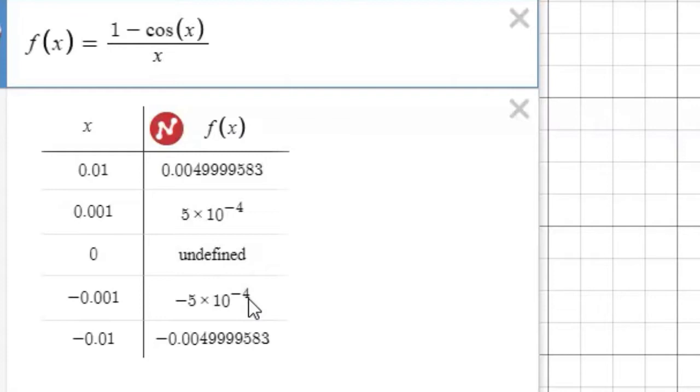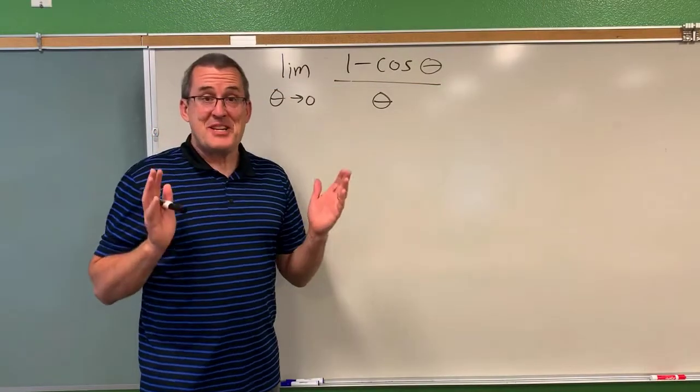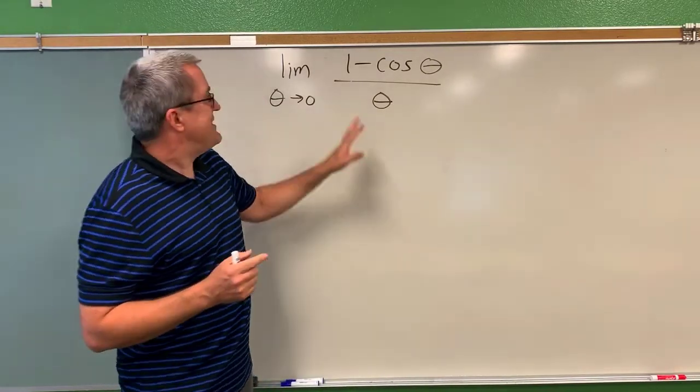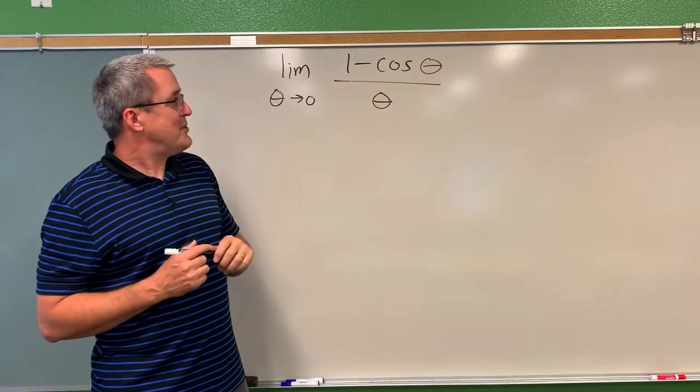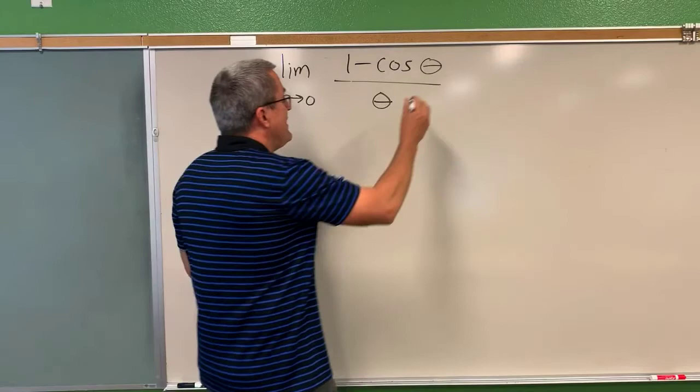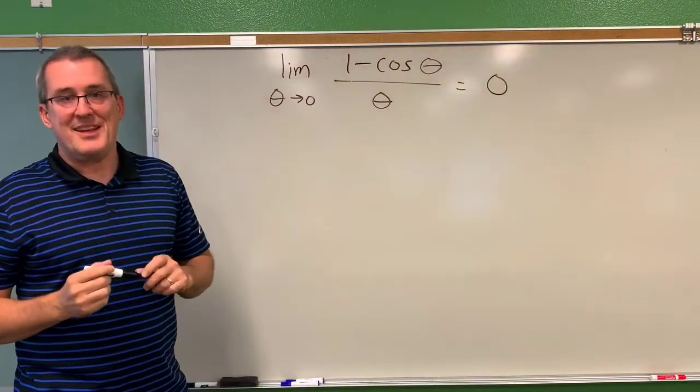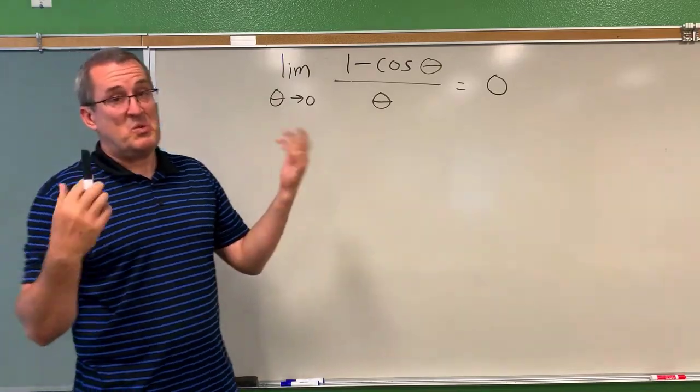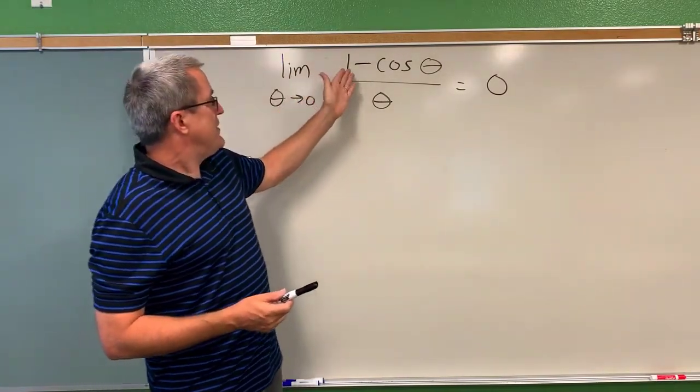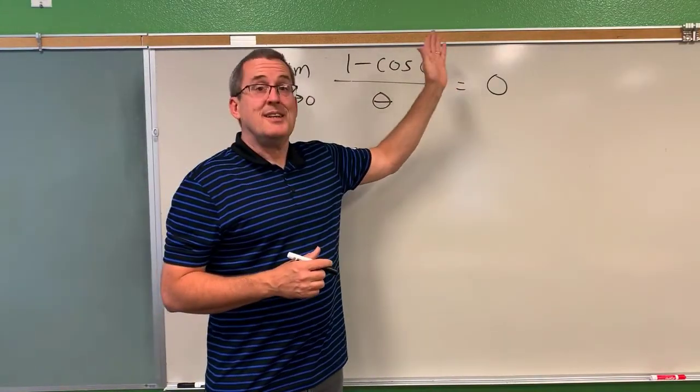So let's go back to the board and see how we're going to record this result. So after examining the table values, after examining a graph, we see that the function 1 minus cosine of theta all divided by theta has output values that are really nearby to zero when the angle measure theta is nearby to zero. And so we conclude that the limit as theta approaches zero of 1 minus cosine theta all divided by theta approaches zero.